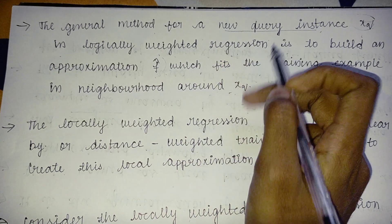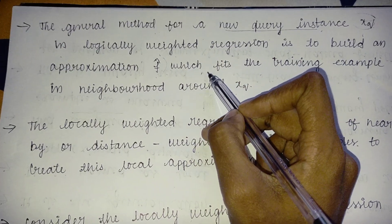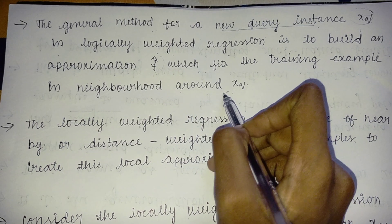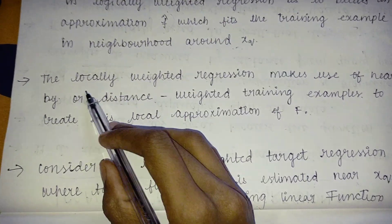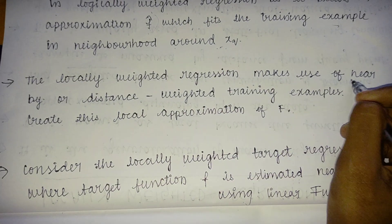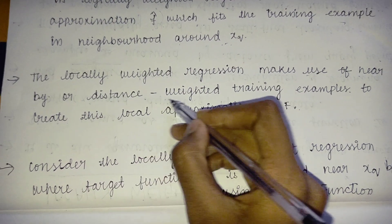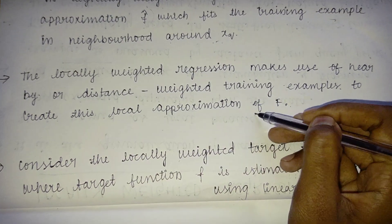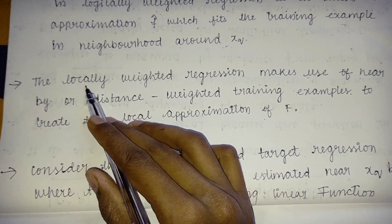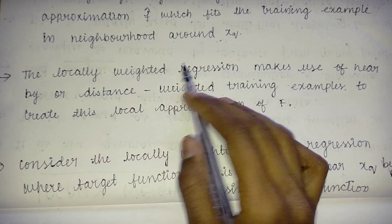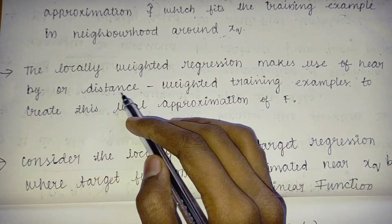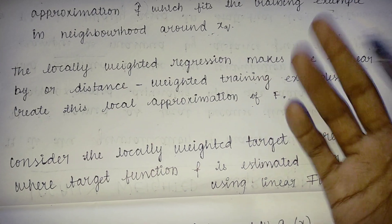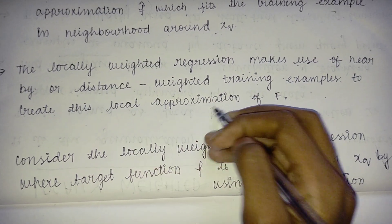Locally weighted regression makes use of nearby or distance-weighted training examples to create this local approximation of f.